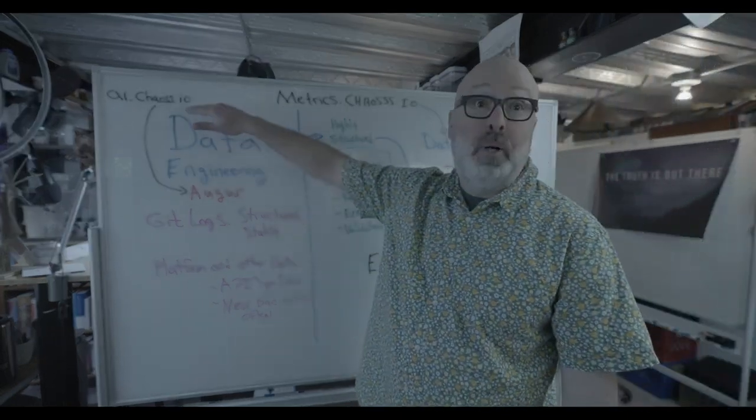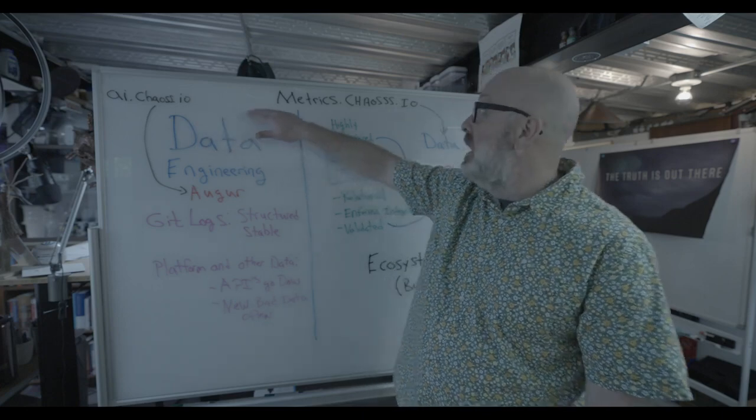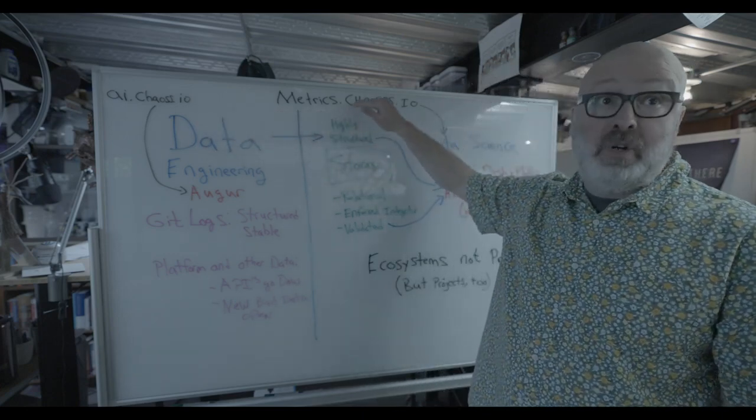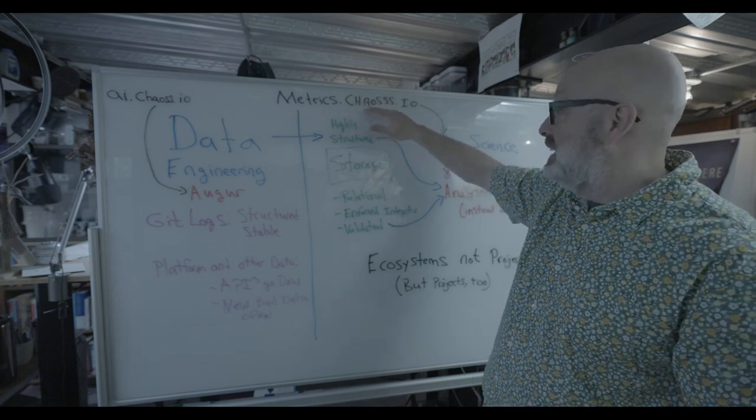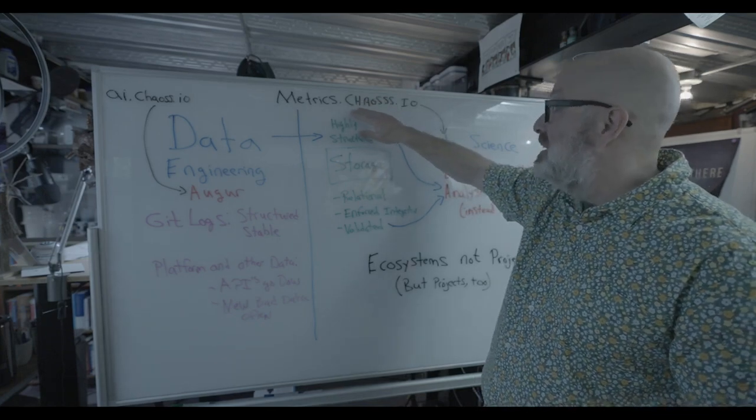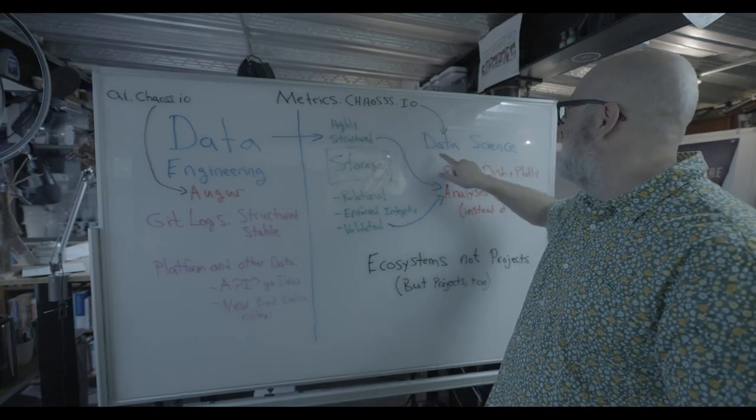You can get to Augur's public instance directly at ai.chaos.io, and you can get to the Atenot instance directory, which is where we recommend that you start, at metrics.chaos.io. That's metrics, M-E-T-R-I-X, not C-S, .chaos.io.